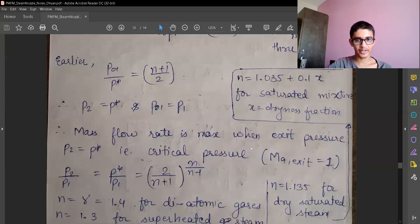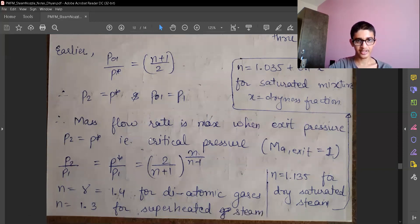So mass flow rate is maximum when exit pressure P2 equals P star, that is critical pressure. Mass flow rate is maximum when we have critical pressure at the exit—that is, critical pressure means the Mach number at exit is 1. And this is the relation P2 by P1, that is P star by P1 equals 2 upon N plus 1 raised to N by N minus 1. N is the polytropic index.